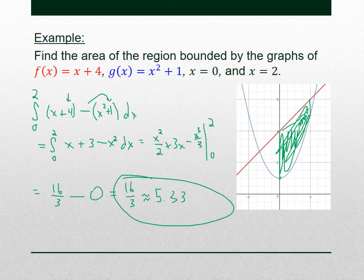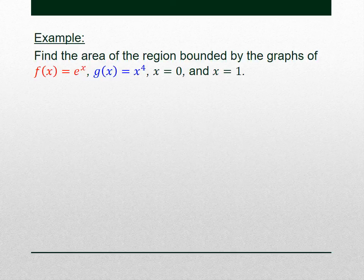We integrated the definite integral from the lower x value to the higher x value and did the top guy minus the bottom guy, giving us the area between those two curves. For example: find the area of the region bounded by f(x), g(x), x = 0, and x = 1.